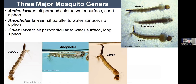As a recap: Aedes larvae sit perpendicular to the water with a short siphon; Anopheles sit parallel to the water because they have no siphon and breathe directly through their abdomen; Culex, like Aedes, sit perpendicular but have a much longer, skinnier siphon. With experience, you can look at larvae and identify the group. If you can't do it right away, that's okay — it takes time.